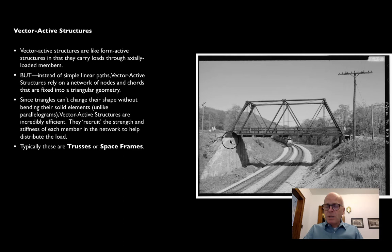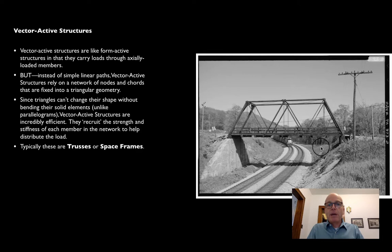Notice a couple of things. First and most importantly, the chords are all arranged in triangles, so vector active structures tend to have an overall triangular geometry. The triangle is the structural engineer's best friend because it's the simplest possible shape and it can't change its shape without bending or deforming some of the members within it. A square or rectangle, since it has four joints, can become a parallelogram — it can rack. In a triangle, you're not relying on the stiffness of the joints to keep the shape intact; you're relying instead on the overall geometry.